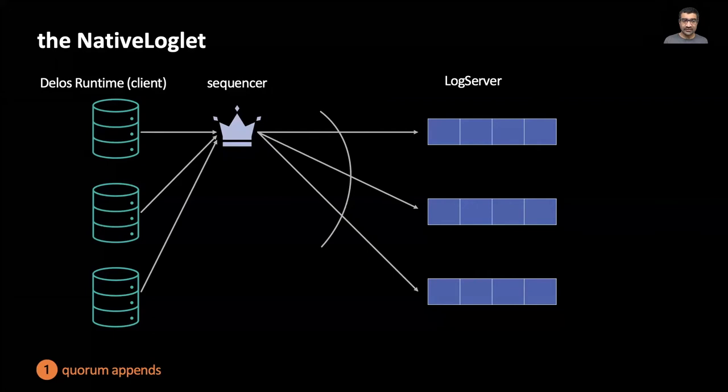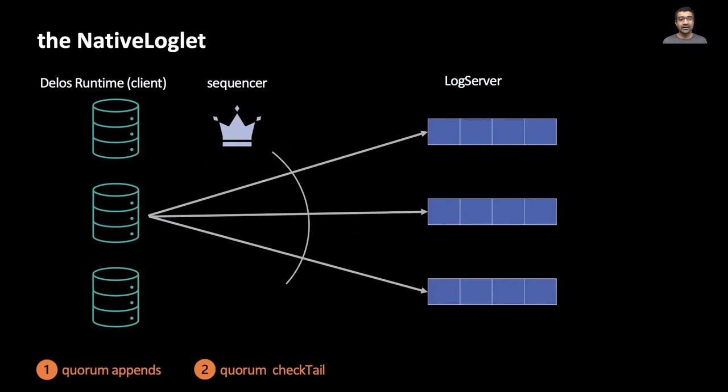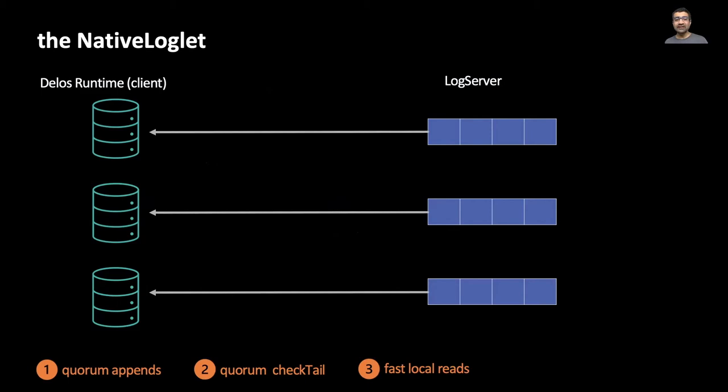The loglet becomes unavailable for appends if the sequencer goes down. To check the tail of the log, the client goes directly to the log server and waits for a quorum to respond. Since the sequencer is not involved, check tail is fault tolerant. After a check tail, the client on the server can read committed entries directly from its local log server.